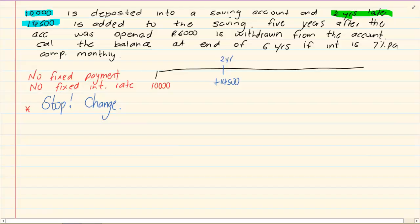Then it says 5 years after, now look this one is a trick, 5 years after the account was opened. Now they are not talking of 5 years from the 2 years, in other words you are jumping to 7 years. No, you started here. So if they say 5 years after you open the account, then it means 3 years from this point. So if I take from here, 2 years plus 3 years is giving me 5 years.